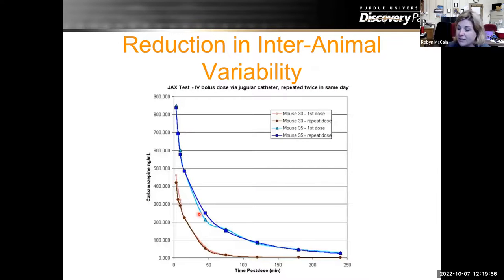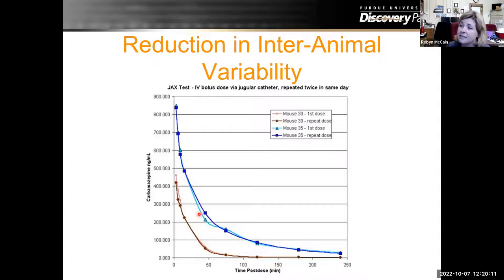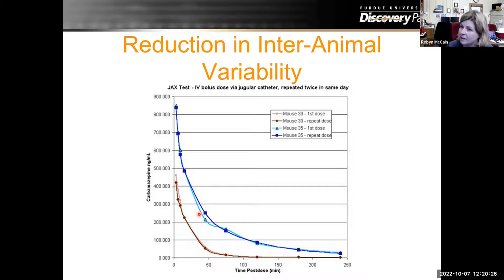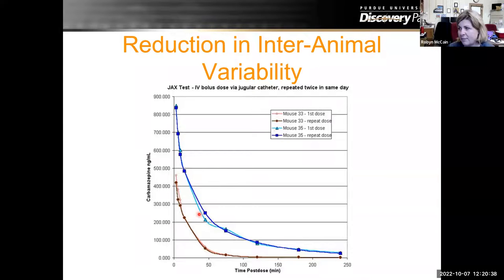There's also a reduction in animal variability with this system. You can see here that we dosed basically the same mouse once and then a repeat dose the next time. Basically the dose was repeated twice in the same day, and you can see that although the animals are different, the doses were absorbed the same. You have your animal variability between the two, but between doses it's very consistent. That really helps in reducing your animal numbers because you know that when you're doing a repeat dose, you're able to keep that consistent within the same animals.